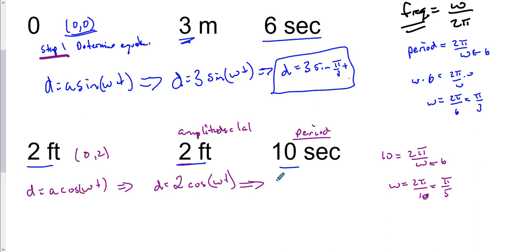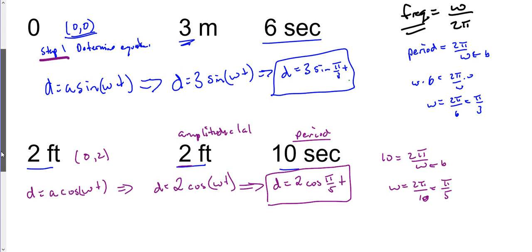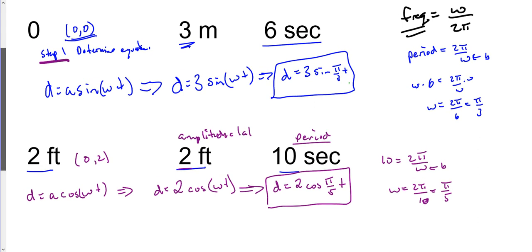So what we have here is we should have an equation of 2 cos(π/5·t), and that, my friends, is our final model, our final equation for simple harmonic motion with these given constraints.